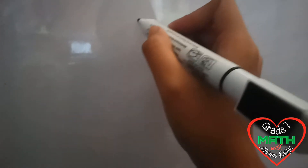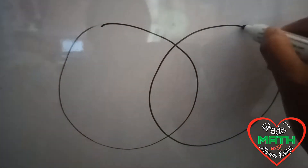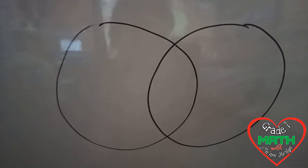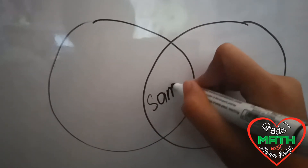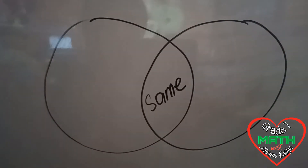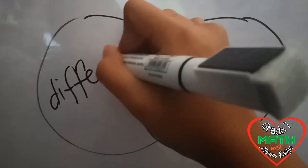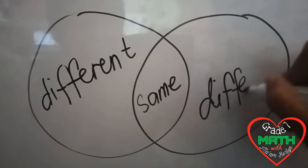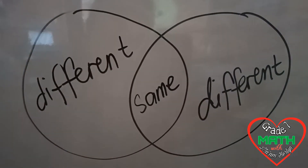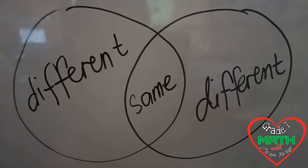To do the Venn diagram, we are going to draw circles — a circle and another circle overlapping the first one. The area in the middle shows the similarities of the two things or objects, and the remaining spaces show the differences of the two objects. You can also use three circles to show the similarities and differences of three things.